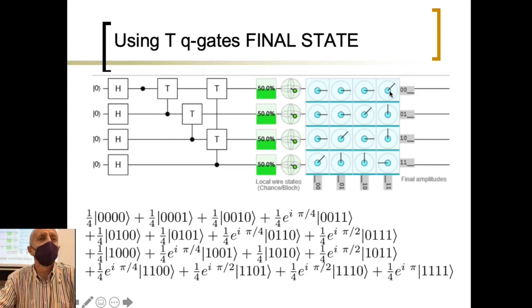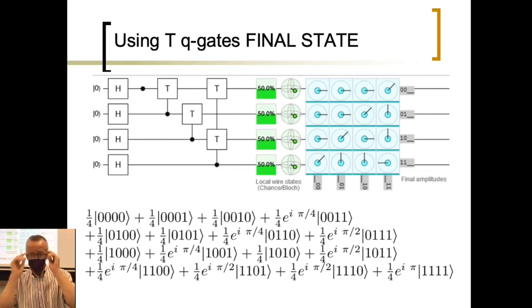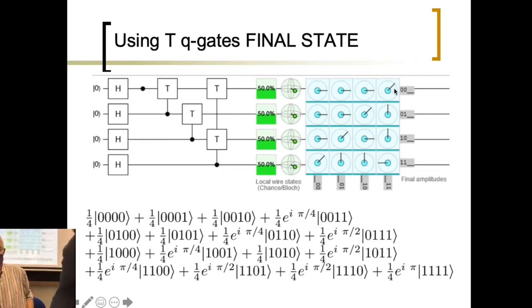The square root of Z is S, and the square root of S is T. What is a T quantum gate? Just rotating over the Z angle pi over four. Okay? So this computes one rotation, one rotation, two rotations here.